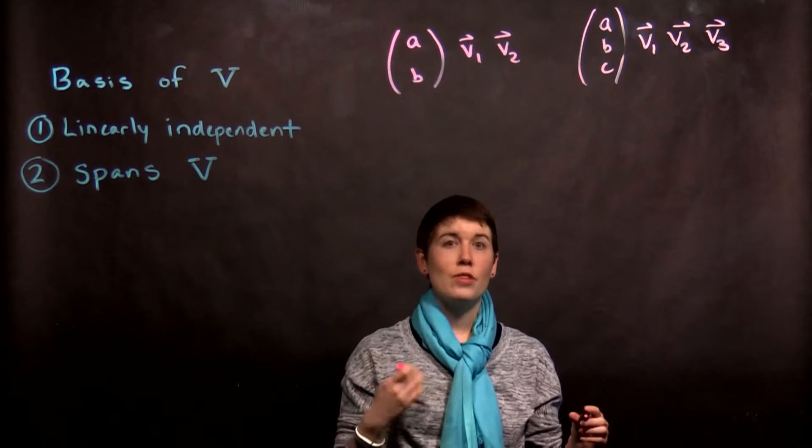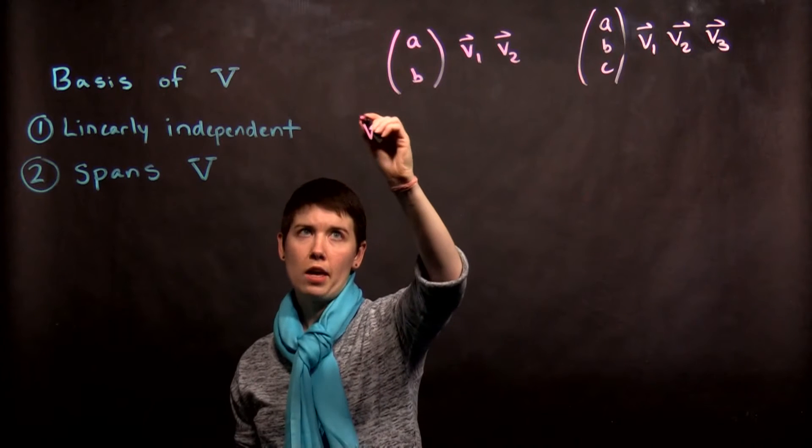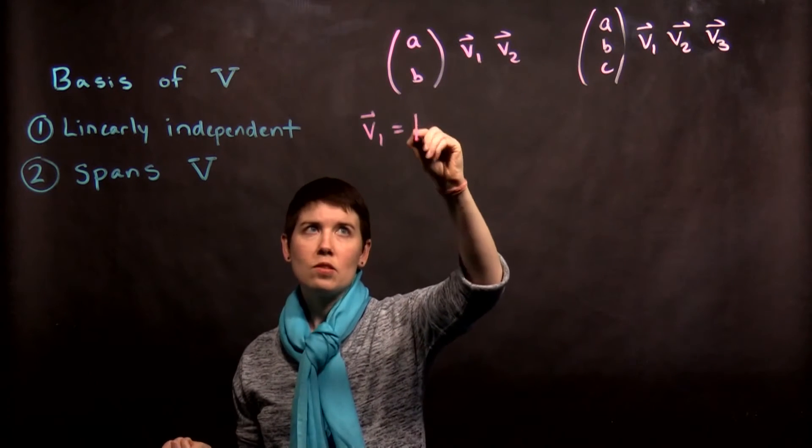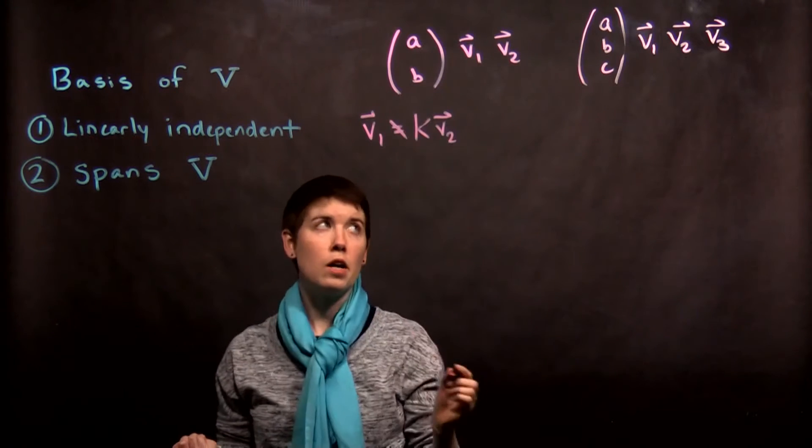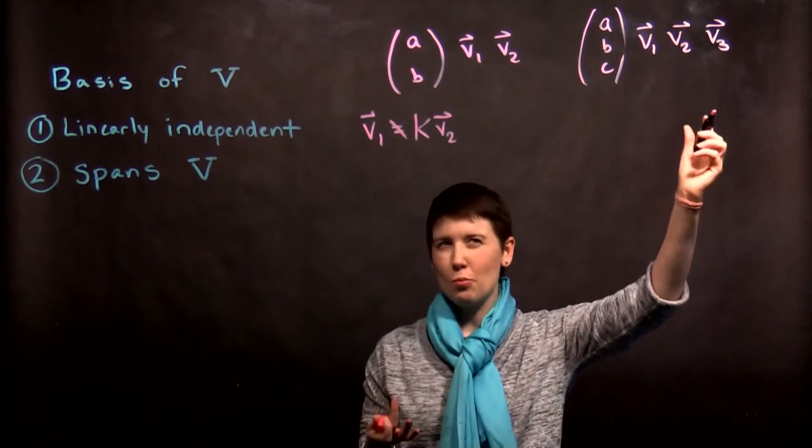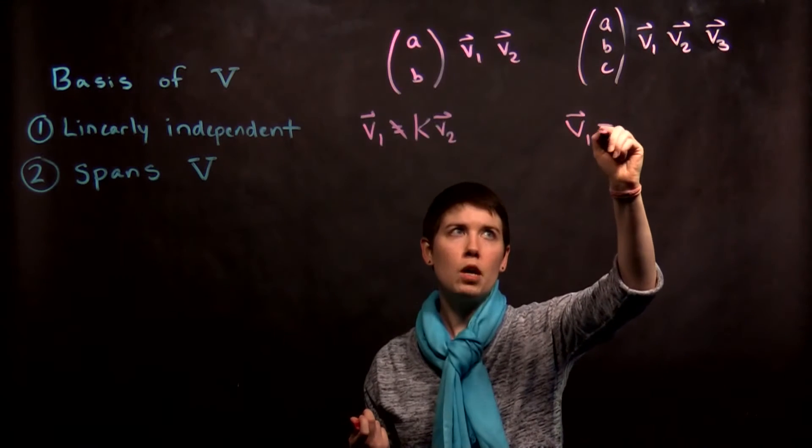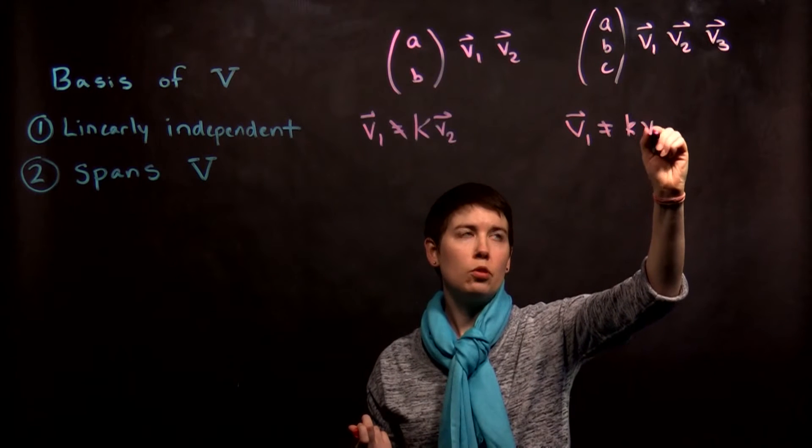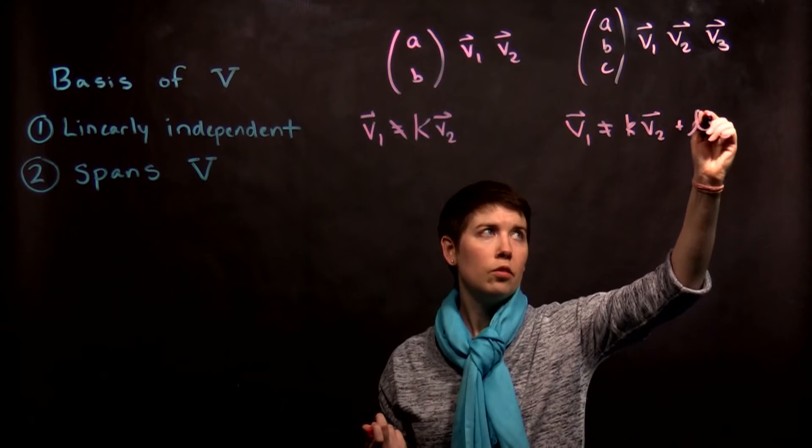Now what does it mean for them to be linearly independent? It means that there is not a way to express V1 as a scalar multiple of V2. That's not possible. Where this gets more complicated is when we have multiple vectors. For instance in this case it's not possible to express it in terms of a scalar multiple of V2 plus V3.